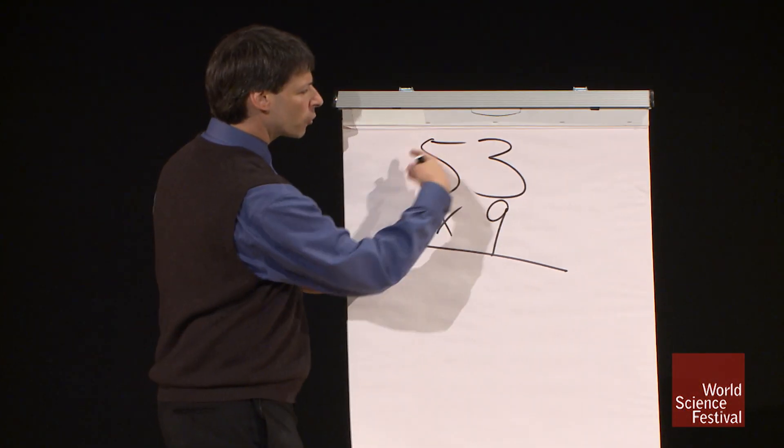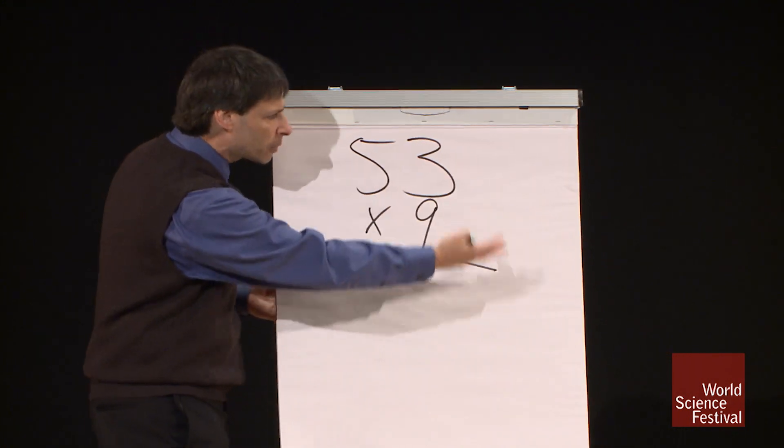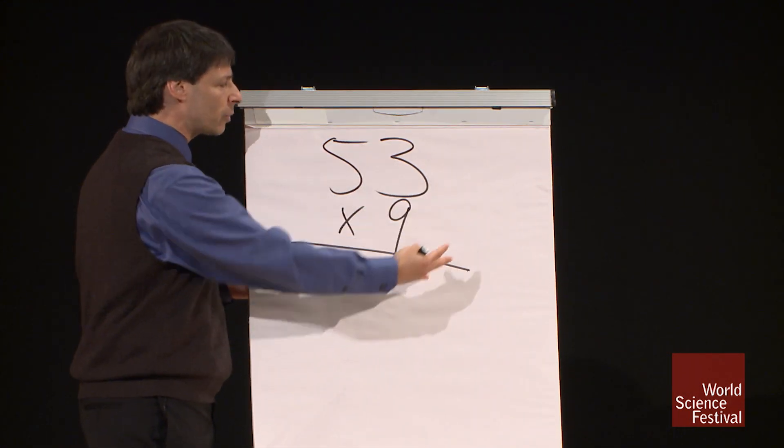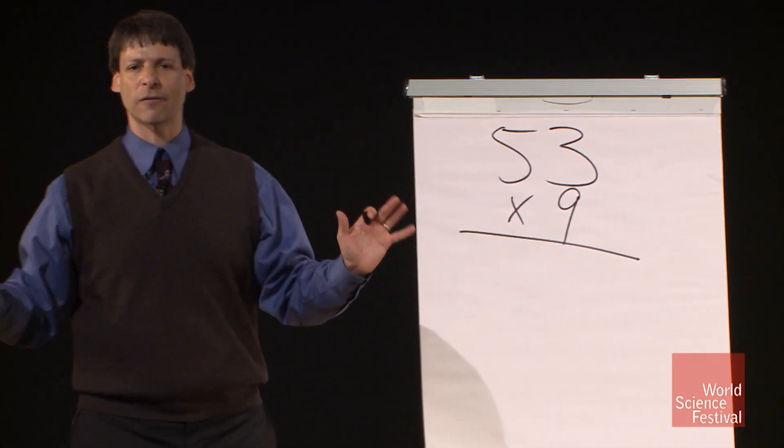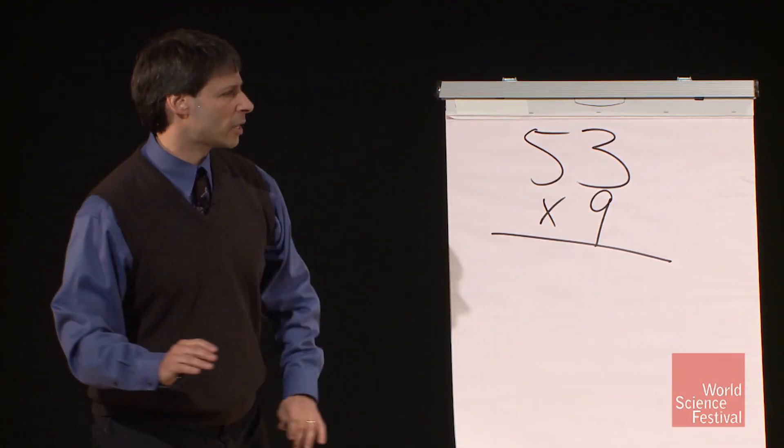After all, we read numbers from left to right, we pronounce numbers from left to right. We say fifty-three, not three and fifty. And with just a little practice, you can calculate from left to right much quicker. Let me show you how.